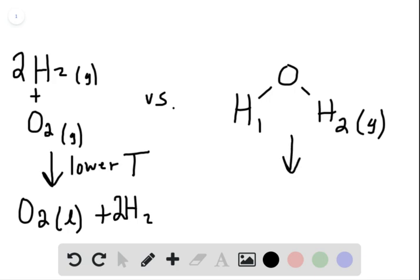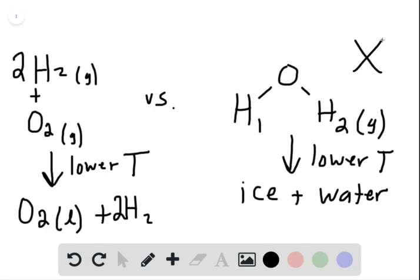If you try to – for example, just get a mixture of – it depends how low you get the temperature, but you would get a mixture of ice and water, right? You try to lower the temperature of the water vapor. If you're not separating the hydrogen from the oxygen in this case.